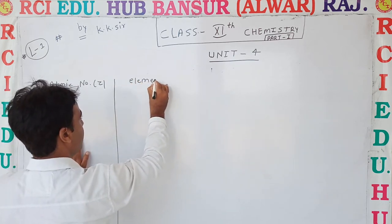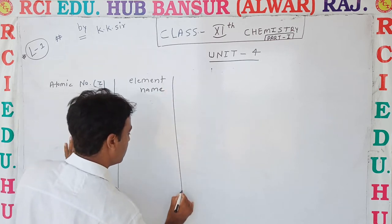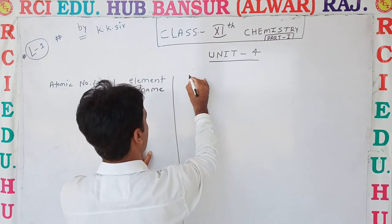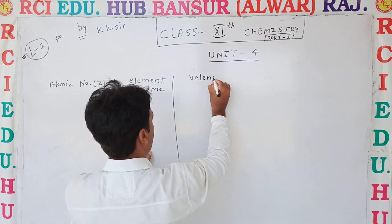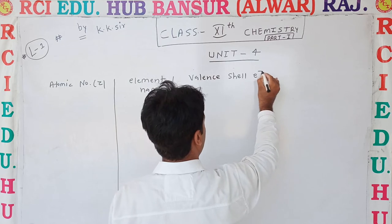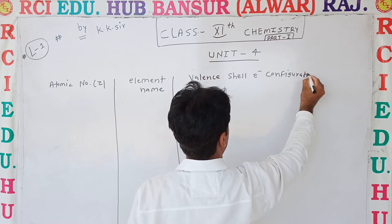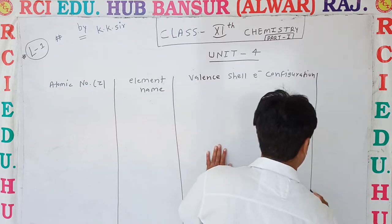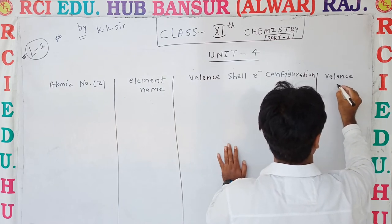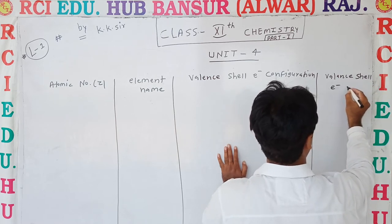We have a table with element name, element symbol, valence shell electronic configuration, and the number of valence shell electrons listed for each important element.